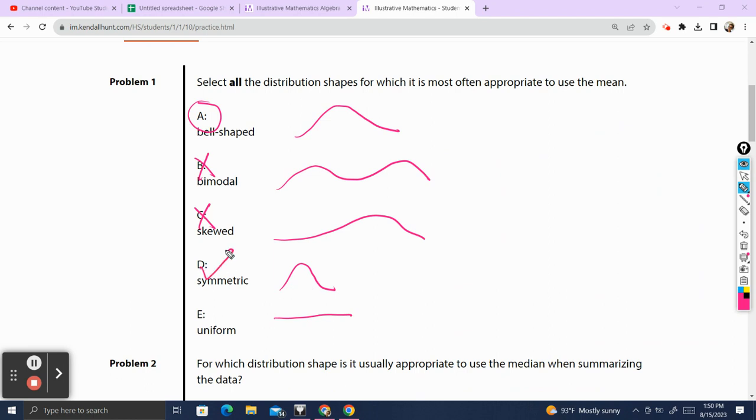However, when you're symmetric, you're going to be good to go with using the mean. The uniform, all of your data is the same, so your mean is also a good measure of center in that case. Let's move on to the next question.